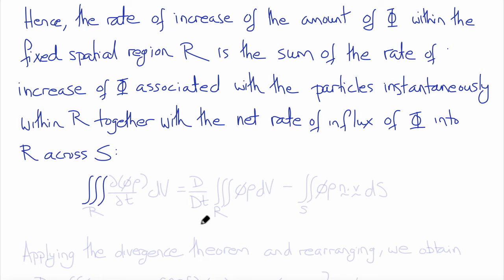So mathematically, this statement above would be the partial derivative of little phi times rho with respect to time, integrated over the volume, equals the material derivative of the volume integral of phi times rho with respect to volume, minus the surface integral over S of phi times rho times n the outward normal dotted with V the velocity vector, integrated with respect to the surface.